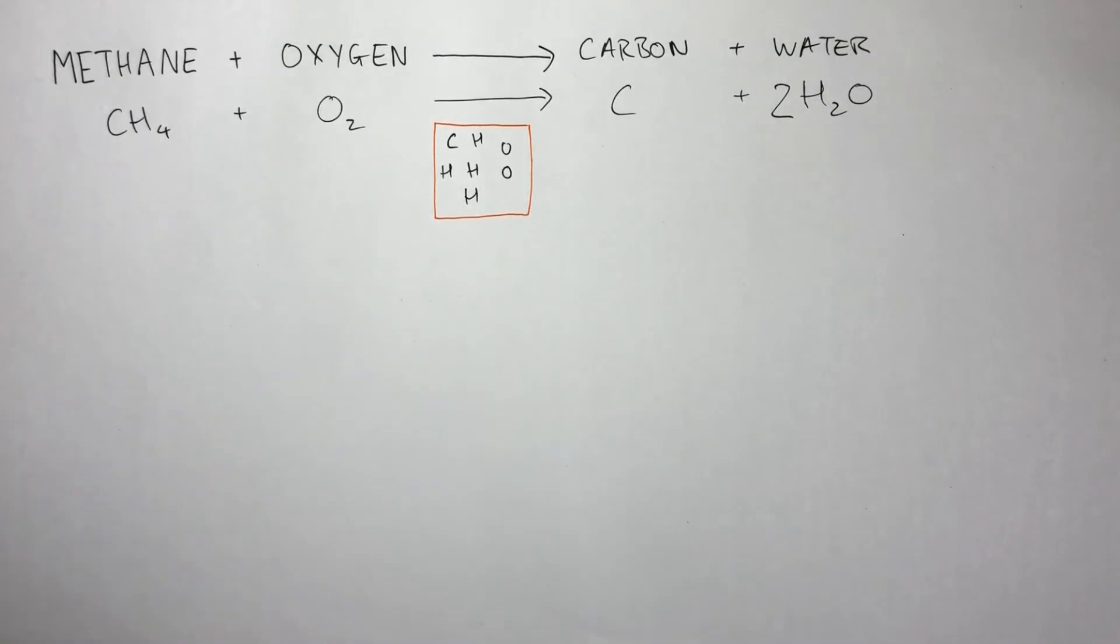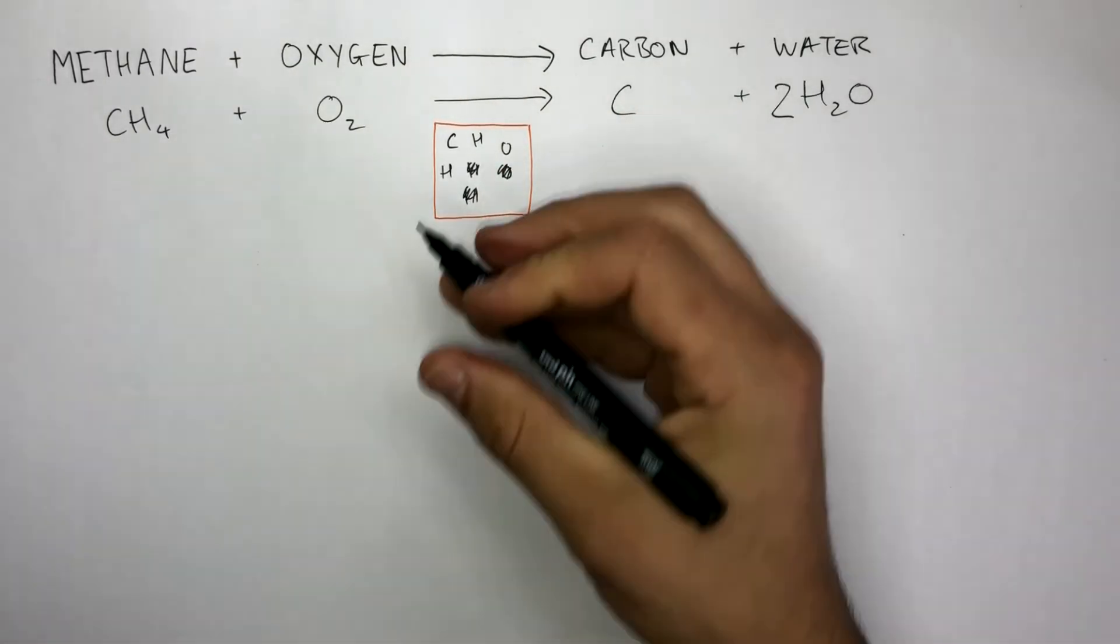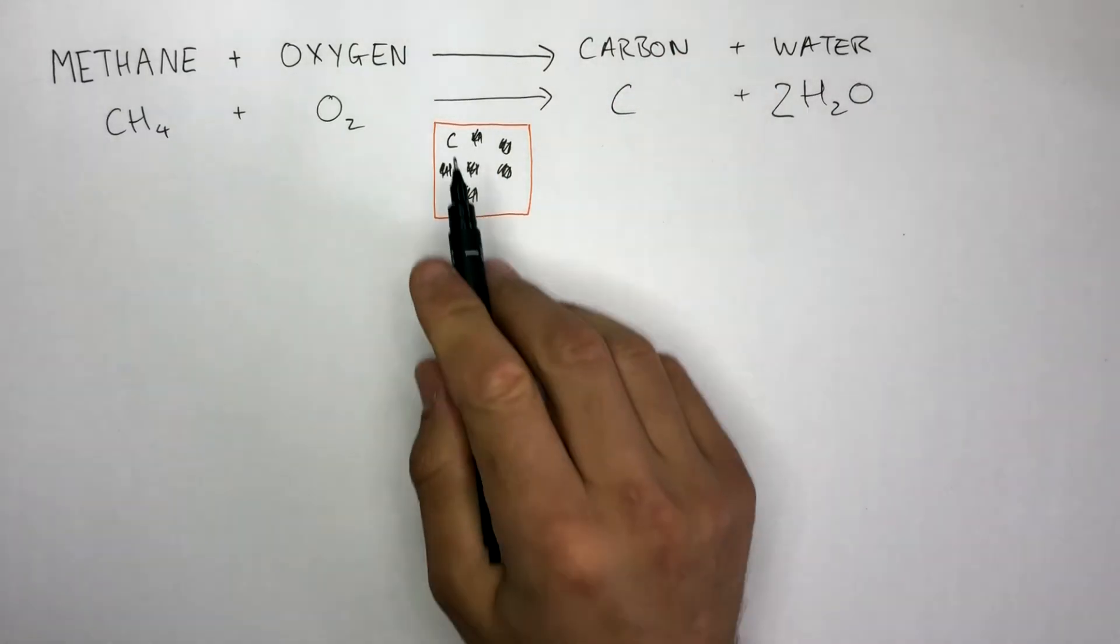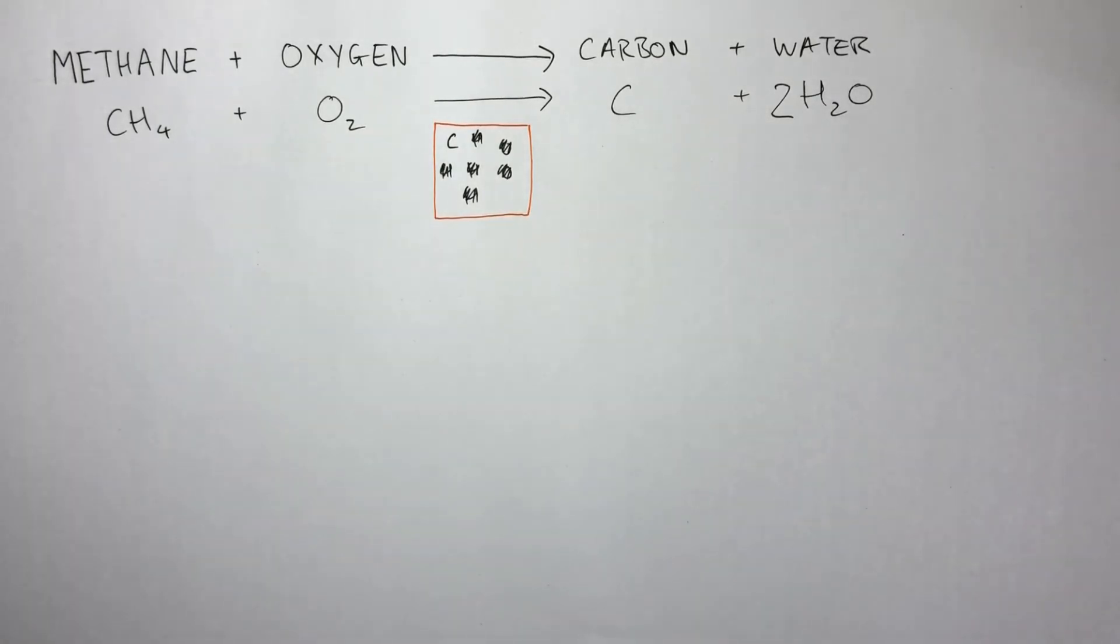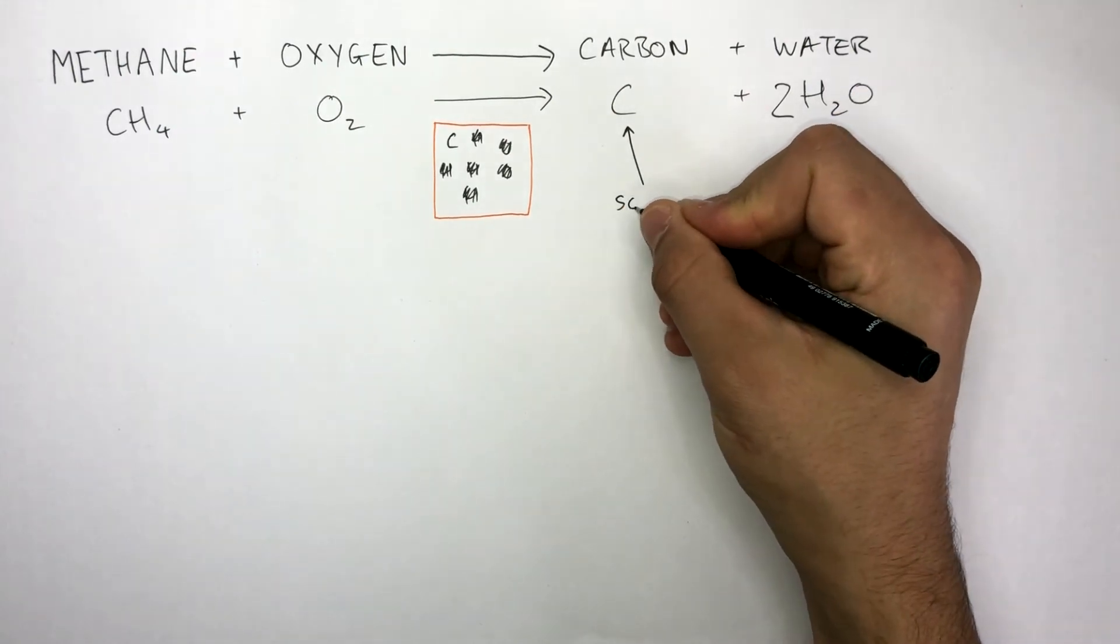Therefore, the two hydrogen atoms are oxidized first by the oxygen atom and then another two hydrogen atoms are oxidized by another oxygen atom, leaving just carbon. There is no more oxygen left to oxidize this carbon atom, so this product is known as soot.